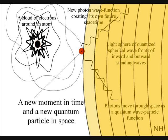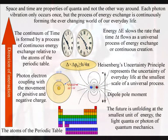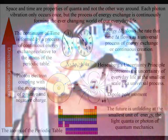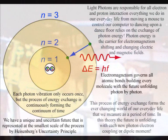In this theory, it is this interaction between photons and the electron probability cloud of the atoms that form the ever-changing world of our everyday life that we measure as a period of time. The future is unfolding with each photon-electron coupling or dipole moment, with each photon oscillation or vibration only occurring once, but with the process of energy exchange as a whole forming a unique and uncertain future.